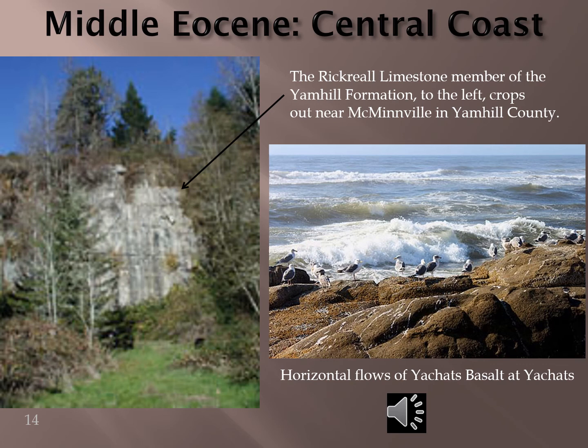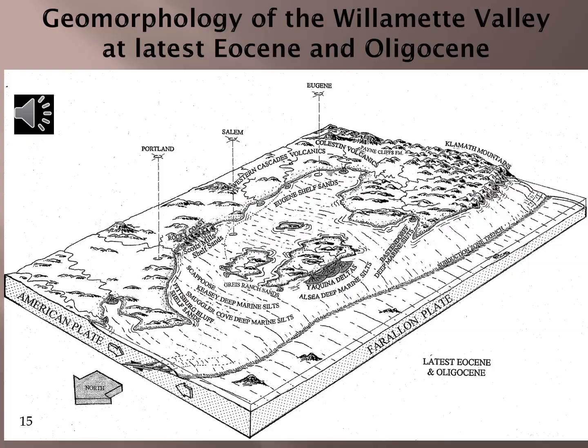Climate changes from the Middle Eocene into Oligocene triggered two episodes of extinction: warm water fauna was replaced by temperate fauna during Late Eocene, and later cool water fauna of the Oligocene replaced the Eocene temperate fauna. At the end of Eocene to early Oligocene, a shallow tropical ocean occupied the Willamette Valley and the present coast range before being replaced by cooler climatic conditions. Due to this climate shift and ocean retreat, locally 60% of plants and 32% of marine invertebrates went extinct.